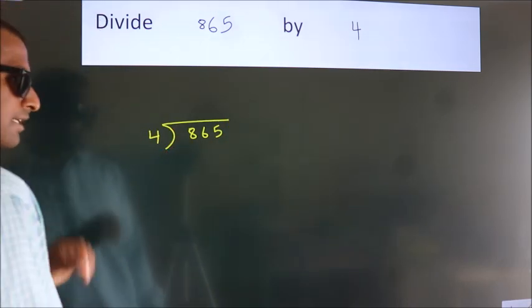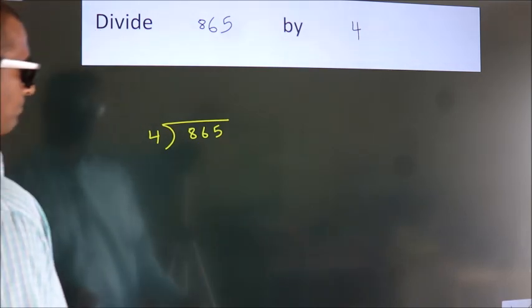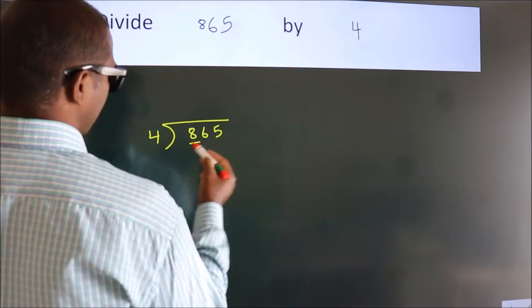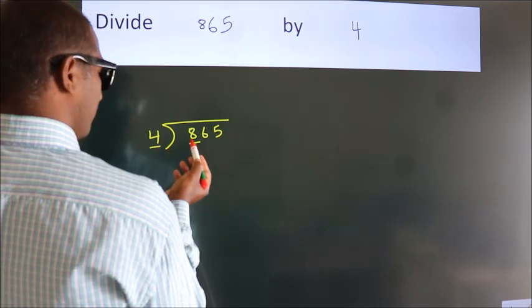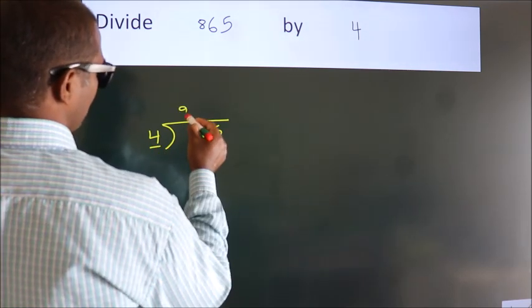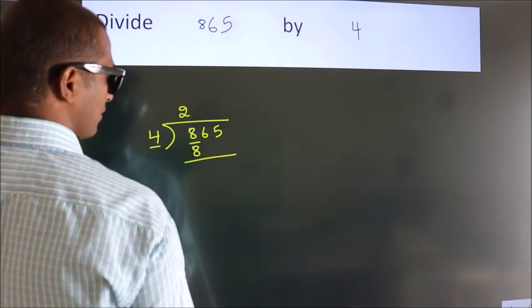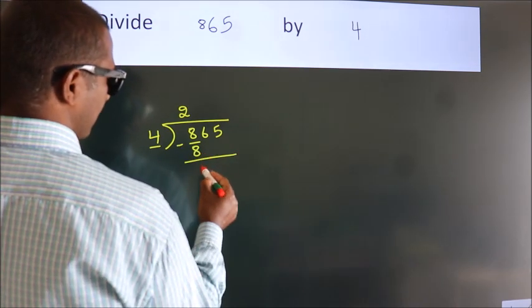This is your step 1. Next, here we have 8, here 4. When do we get 8? In 4 table. 4 2s, 8. Now, we should subtract. We get 0.